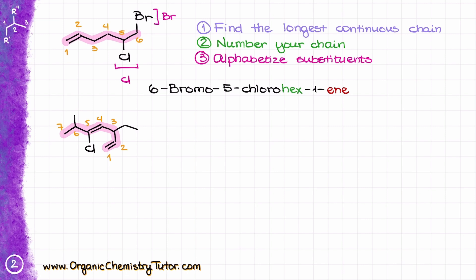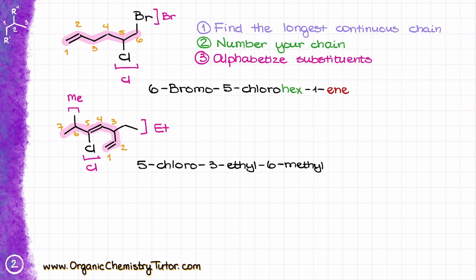If I started counting from the opposite end, that would give my double bond the number three rather than one, and that would be incorrect. Next, I look at my substituents: I have a chlorine atom, a two-carbon ethyl group, and a methyl group. Alphabetizing: C comes before E in the alphabet, so I start with chlorine. Then ethyl, then methyl — giving me 5-chloro, 3-ethyl, 6-methyl.